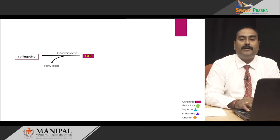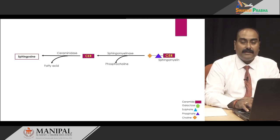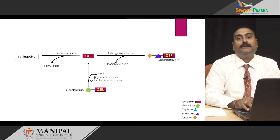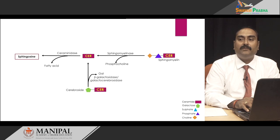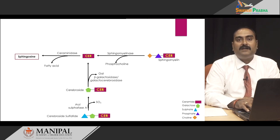To break down ceramide into its individual components — sphingosine and fatty acid — we need the enzyme ceramidase. Ceramidase acts on ceramide to remove the fatty acid. Sphingomyelin can be converted to ceramide by using the enzyme sphingomyelinase, which removes the phosphocholine group. From galactocerebroside, ceramide can be obtained by removing the galactose residue using beta-galactosidase (also called galactocerebrosidase). From a sulphated cerebroside, we can get back galactocerebroside and further break it down to ceramide; the enzyme responsible for converting sulphated cerebroside to galactocerebroside is arylsulfatase A, which removes the sulphate group.